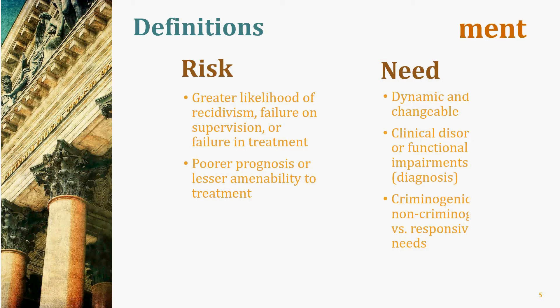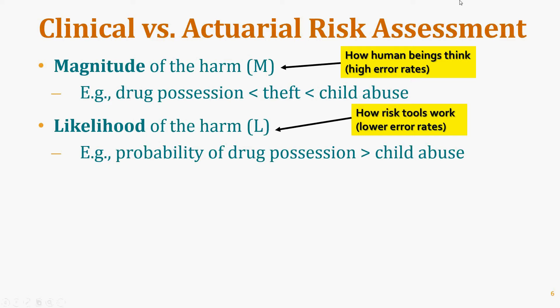Magnitude of harm is the way human beings think — we focus on the outcome, overestimating the risk of serious events and underestimating the risk of non-serious events. Human beings have the highest error rates in assessing risk; this is why people play the lottery despite infinitesimally small odds, because the magnitude of the win is perceived as high. Most risk assessment tools, however, focus on the likelihood of harm rather than the magnitude.